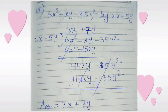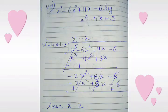We multiply 2x minus 5y with 7y and get 14xy minus 35y squared. We change the sign of the last line and both terms are cancelled. The final answer is 3x plus 7y.